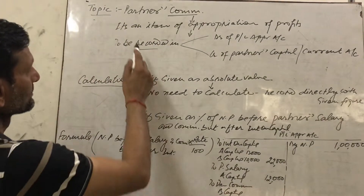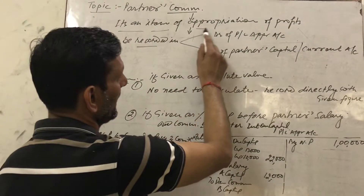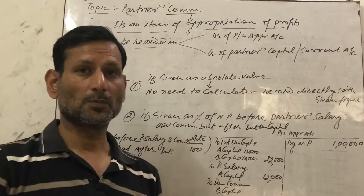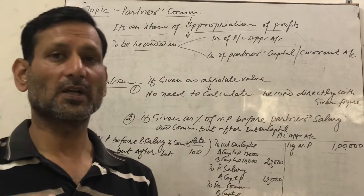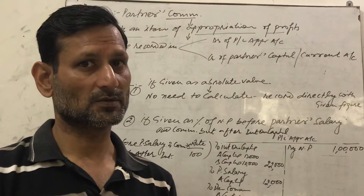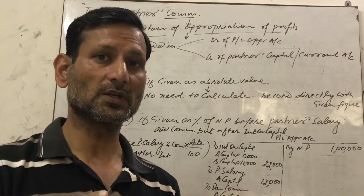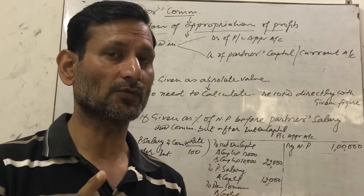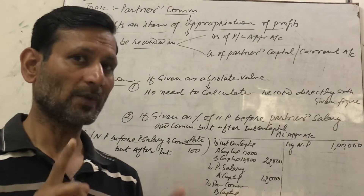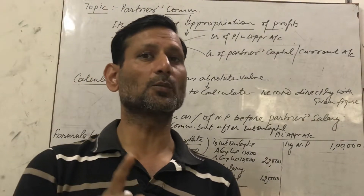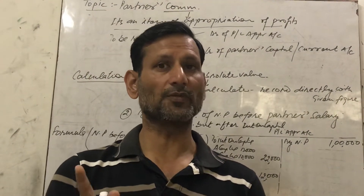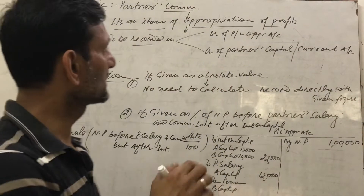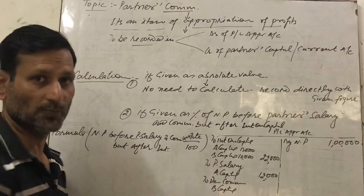First of all, Partners Commission is an item of appropriation of profits. Notice that it is not an item of charges on profits, but it is an item of appropriation of profits. Manager's Commission is an item of charges on profits and is recorded in the debit of Profit and Loss Account, but Partners Commission is an item of appropriation of profits.